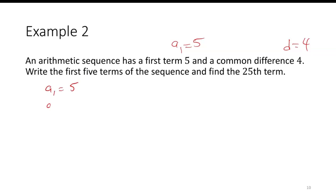Well, we know the first one a 1 is 5. a 2 would be basically 5 plus 4, which is 9. a 3 would be 9 plus 4, so 13. a 4 would be 13 plus 4, so 17.